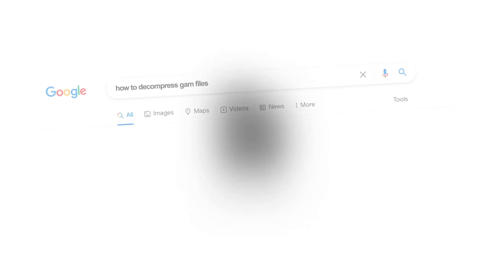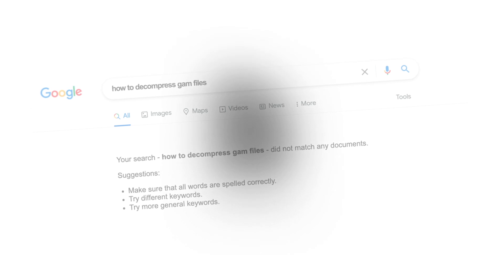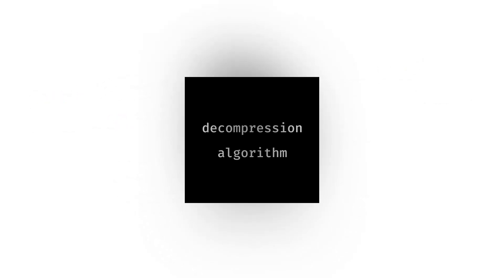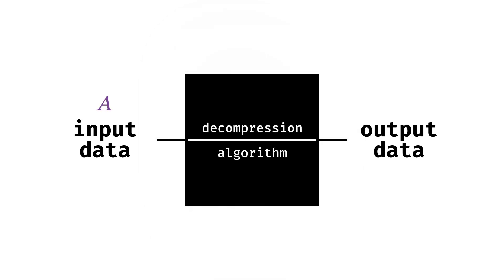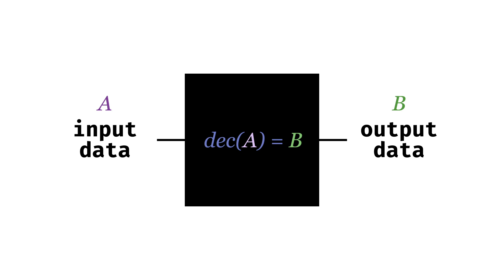There was no documentation for the compression format and none of us knew how to work with a debugger. One way to figure out a compression format is by comparing the input data and the output data. If you know what the compressed data looks like and what the decompressed data looks like, the problem can be seen as an interesting logic exercise — what happens in the black box, if you will.